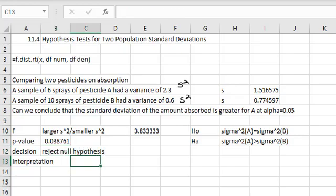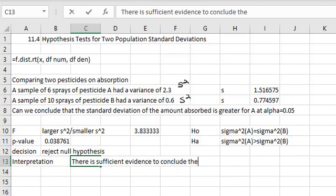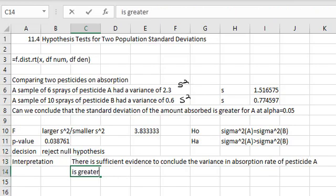And we can make our interpretation of this result. We successfully rejected the null, focusing on the alternative. There is sufficient evidence to conclude that the variance in absorption rate of pesticide A is greater, as the alternative says, than the absorption rate of pesticide B.